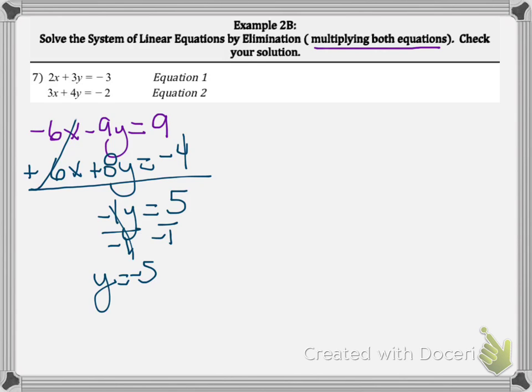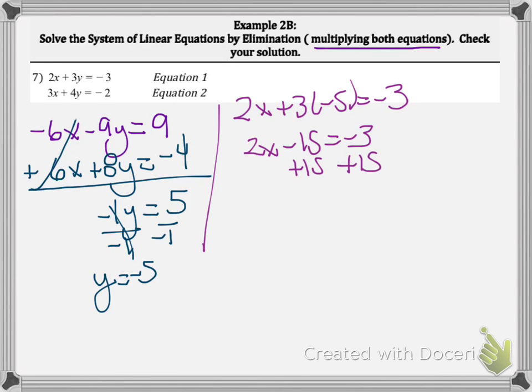I'll substitute it in the first one: 2x plus 3 times negative 5 equals negative 3. So 2x minus 15 equals negative 3. Add 15 to both sides, therefore 2x equals 12 divided by 2, so x equals 6.